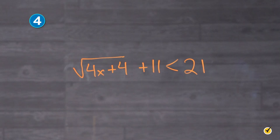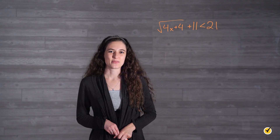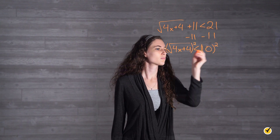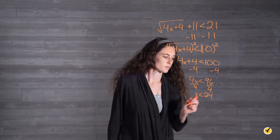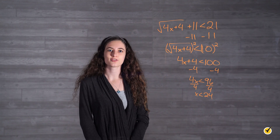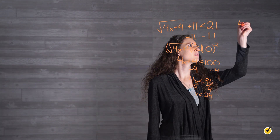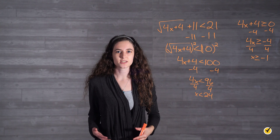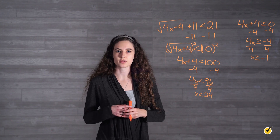I want to do one more problem before we go, but this time try it on your own. Once I give you the problem, pause the video and solve the inequality yourself. Then press play and see if your answer matches up with mine. Think you've got it? Let's see. First, we want to solve our inequality normally. Then we set what is under the radical greater than or equal to 0 and solve for x again. Since our signs are in opposite directions, our final inequality will be a compound inequality.